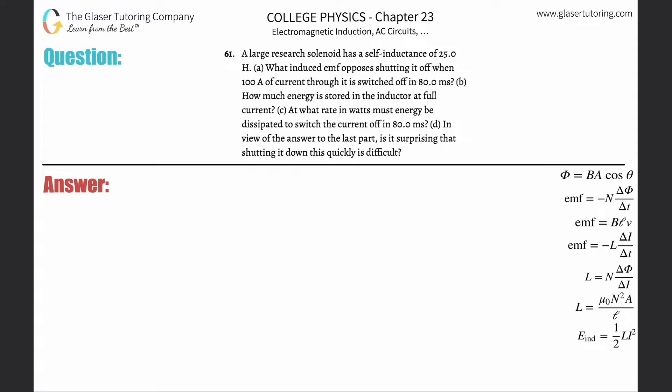Number 61: A large resource solenoid has a self-inductance of 25 henrys. Letter A: What induced EMF opposes shutting it off when 100 amps of current through it is switched off in 80 milliseconds? So we're talking about self-inductance, so we need the self-inductance formula. This says that an induced EMF that will oppose the changing current inside of a coil will be equal to the inductance of that particular coil multiplied by the change in the current divided by the change in time.